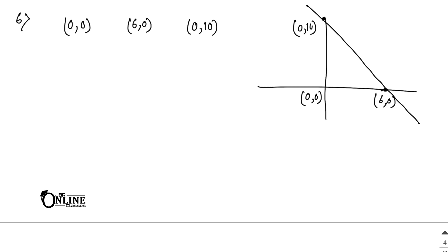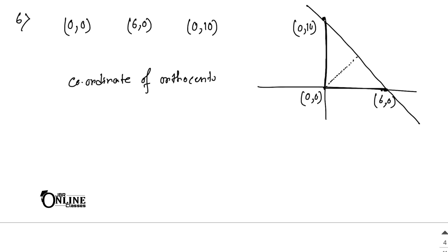Sum 6: Find the orthocenter of the triangle with vertices (0,0), (6,0), and (0,10). The orthocenter is the intersection of the three altitudes. For a right-angle triangle, the two sides along the axes are perpendicular, so the orthocenter is at the origin, (0,0).